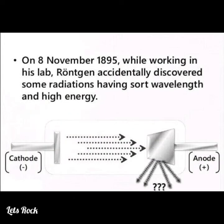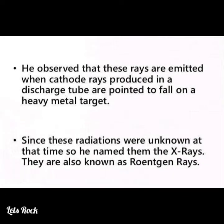On 8 November 1895, while working in his lab, Röntgen accidentally discovered some radiations having short wavelength and high energy. He observed that these rays are emitted when cathode rays produced in a discharge tube are pointed to fall on a heavy metal target. Since these radiations were unknown at that time, he named them X-rays. They are also known as Röntgen rays.